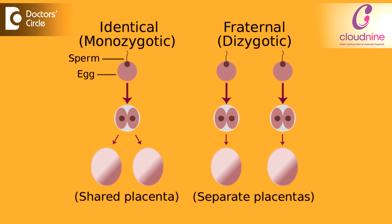In twin pregnancy, there are two types. One is dizygotic twins and the other is monozygotic twins. Zygosity refers to the number of eggs from which the baby is formed.